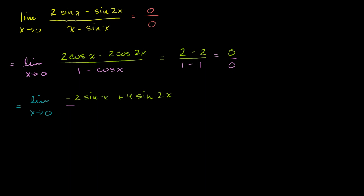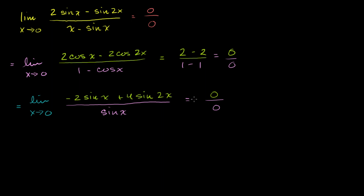For the denominator, the derivative of 1 is 0 and the derivative of negative cosine of x is sine of x. Let's take this limit. In the denominator, sine of 0 is 0. In the numerator, negative 2 times sine of 0 is 0, and 4 times sine of 0 is also 0. So once again we have the indeterminate form.